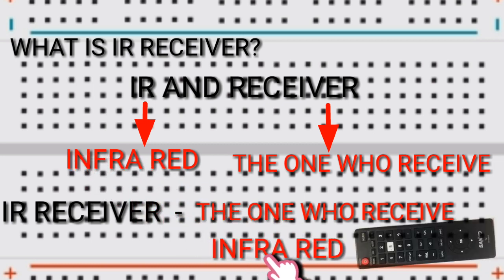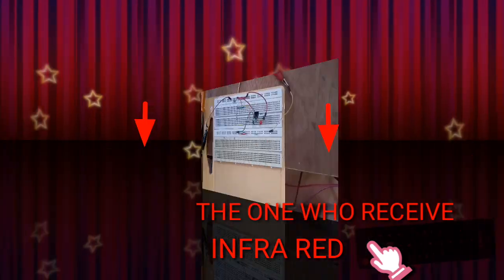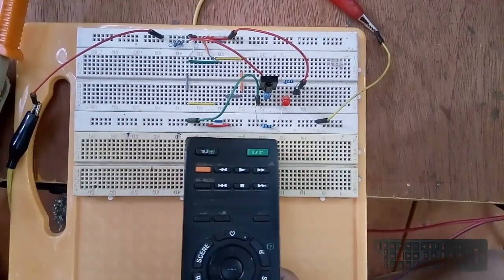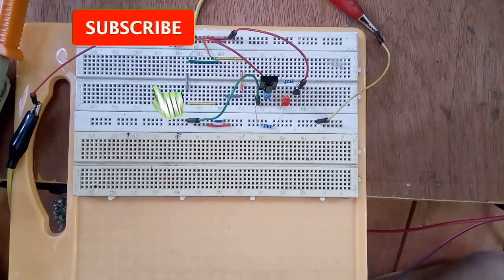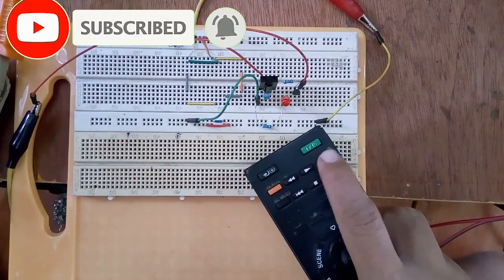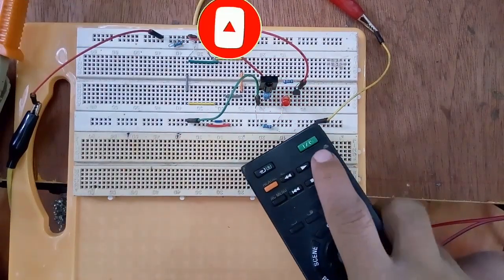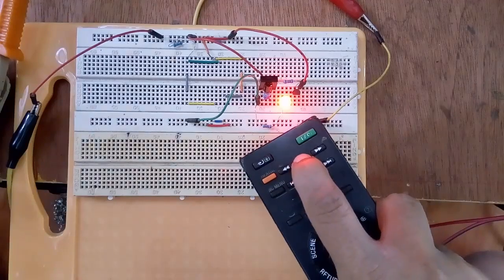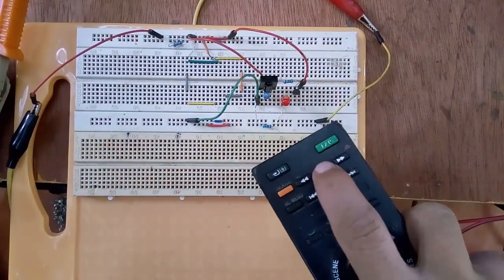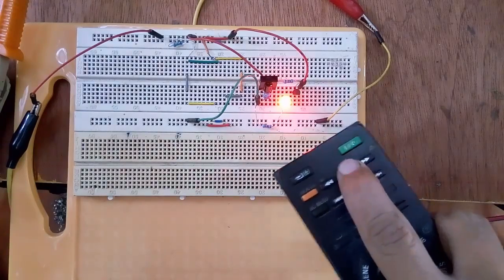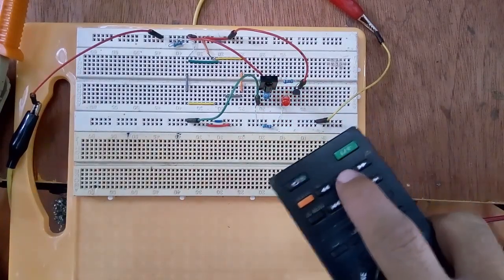From the remote control, when I press the button of the remote control, the signal frequency 38 kilohertz will be received by the IR receiver.